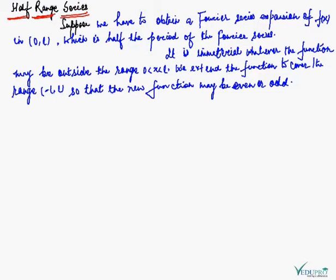Our topic of discussion is half-range series. Many a time, it is required to obtain a Fourier expansion of a function f(x) in the range 0 to l, which is half the period of the Fourier series. To solve such a problem, we borrow the concept that it is immaterial whatever the function may be outside the range 0 to l. So, we extend the function to cover the whole range minus l to l, so that the new function may be even or odd.